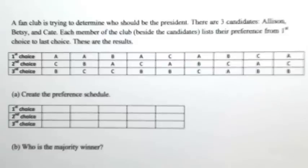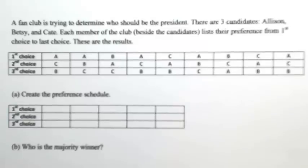A fan club is trying to determine who should be the president. There are three candidates: Allison, Betsy, and Kate. Each member of the club, beside the candidates, lists their preference from first choice to last choice. These are the results.